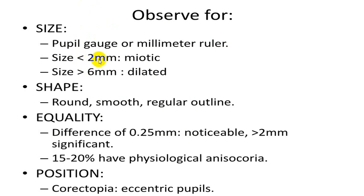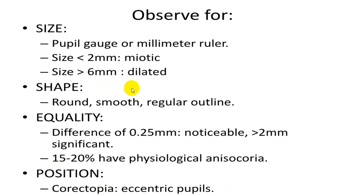Pinpoint pupil is called miotic pupil and fully dilated pupil is called mydriatic pupil. Normal shape is round, margins are smooth, and it is absolutely regular; both pupils are equal in size and shape. Position-wise it is exactly in the center, but an abnormal position is described as corectopia or eccentric pupil. If the two pupils are unequal — say one is 2 mm and another is 6 mm — we use the word anisocoria.